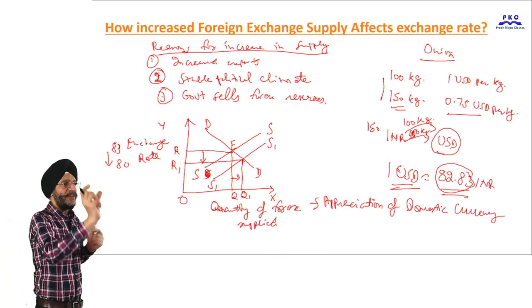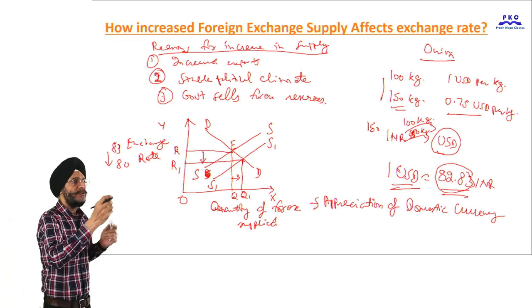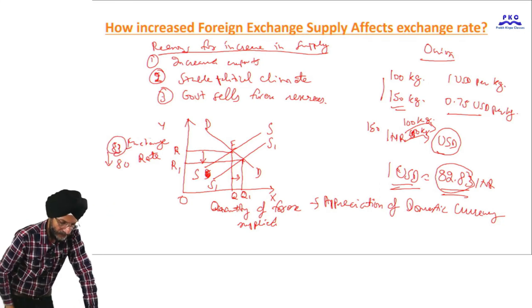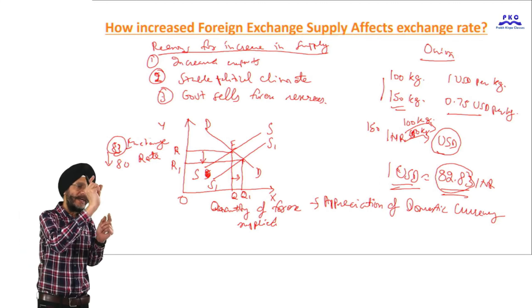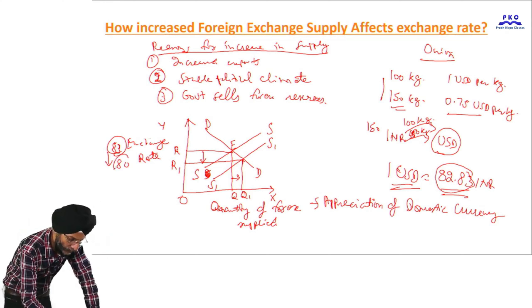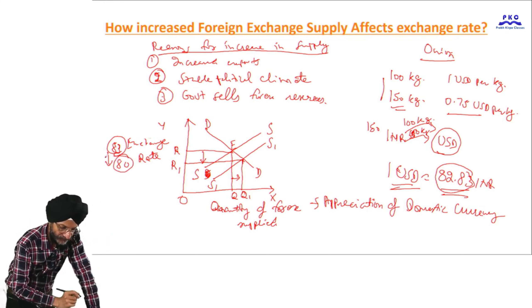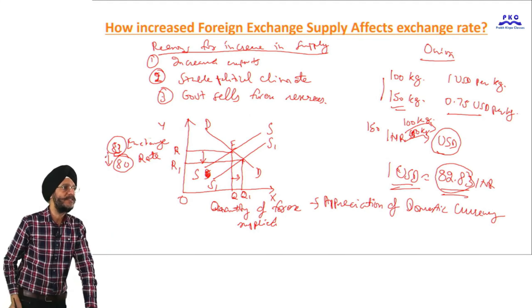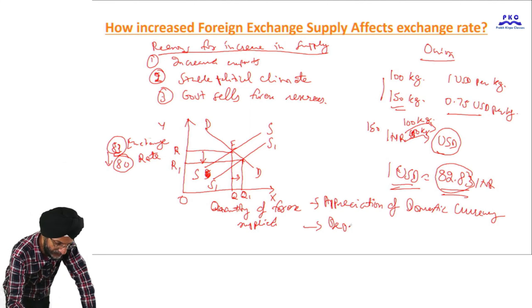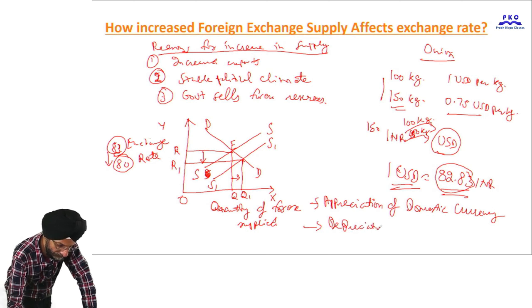Earlier, to get 1 US dollar, we were paying 83 rupees. But now, to get 1 US dollar, we have to pay only 80 rupees. So it is appreciation of domestic currency. It also means depreciation of foreign currency.